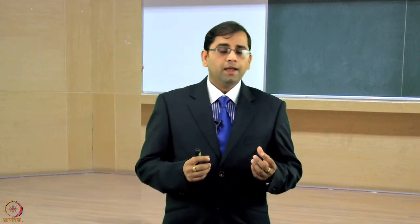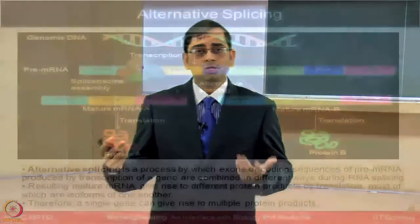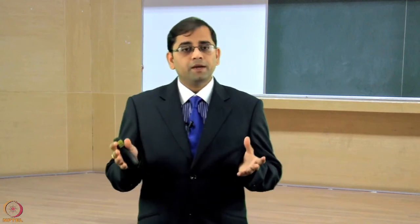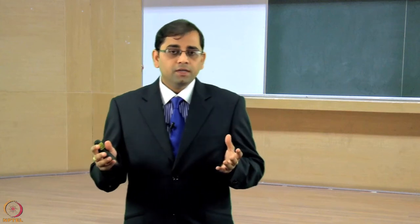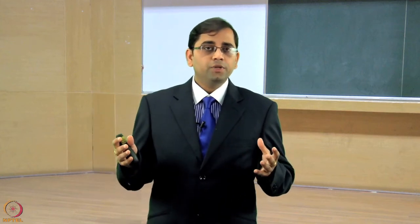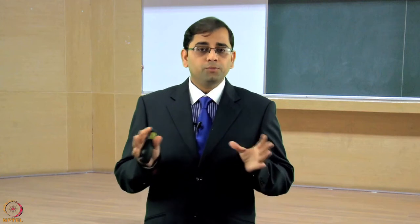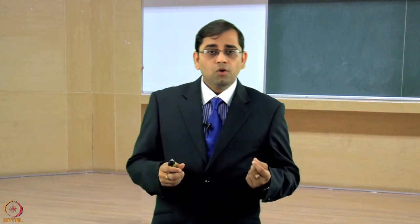An important question is: why do we see different types of RNA forms and multiple protein forms from the same gene? This is dictated by two important phenomena. One is alternative splicing, where exons from pre-mRNA produced by transcription are combined in different ways during RNA splicing. The resulting mature mRNA gives rise to different protein products during translation — isoforms of one another. So a single gene can give rise to multiple RNA forms and different protein products.